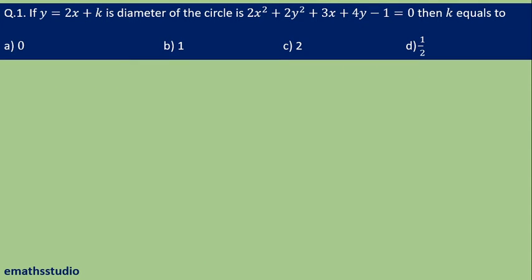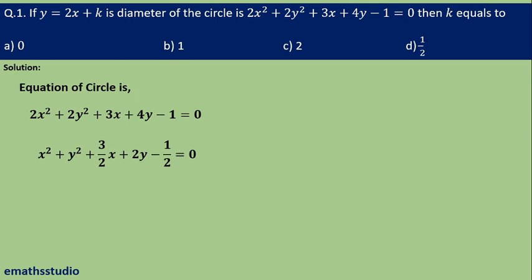Here is the first question: if y equals 2x plus k is a diameter of the circle, find k. The equation of the circle given is 2x square plus 2y square plus 3x plus 4y minus 1 equals 0. First, I am dividing this equation throughout by 2, so it becomes x square plus y square plus 3 by 2 x plus 2y minus half equals 0.